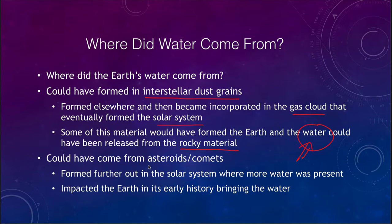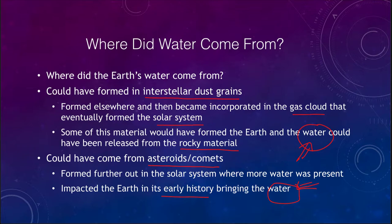Another thought is that water could have come from further out in the solar system — from asteroids and comets that formed where it was colder and water was able to condense. These could have delivered water through impacts early in Earth's history. So there are a couple of different thoughts as to where the water on Earth came from, given that we have a very significant percentage of water on our surface.